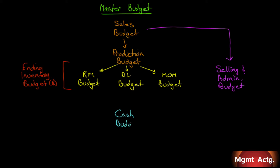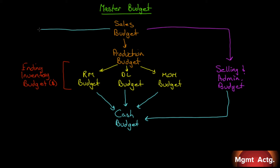Once we have these seven, we can now do a cash budget. Because raw materials cost money, direct labor costs money, manufacturing overhead costs money, selling and administrative costs money, and sales generate cash. So we have a source of cash and we have uses of cash. You can't develop the cash budget until all of these other things are done.